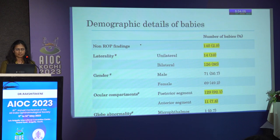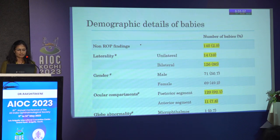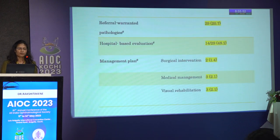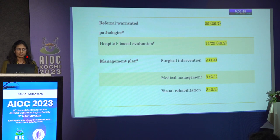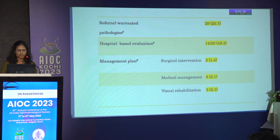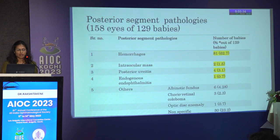Of 2.9% of babies with non-ROP findings: 10% were unilateral and 90% were bilateral; 92.1% had posterior segment pathology and 7.8% had anterior segment pathology; 20.7% had referral-warranted pathologies; and 48.2% of children had hospital-based evaluation. Surgical intervention was done in 2 babies, 3 were managed medically, and 3 were managed with visual rehabilitation.